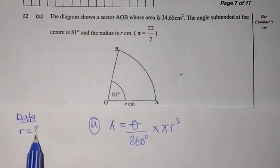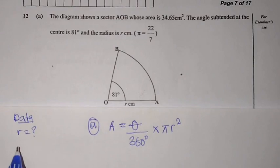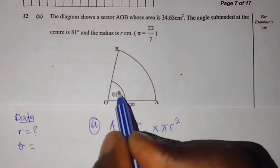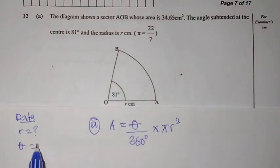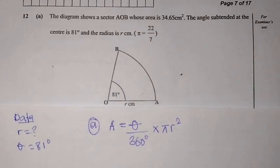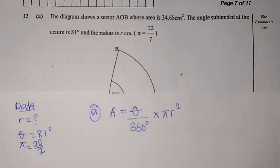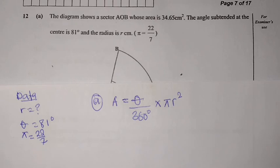We need to organize our data. R is the radius which we don't have. Theta is the angle subtended at the center of the circle which is 81 degrees. The π we have been told to take as 22 over 7. So this is the information that we need.